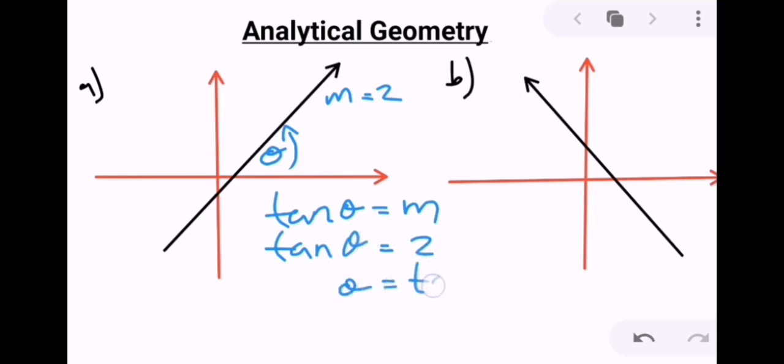I punch this into my calculator and my calculator gives me the answer 63.43 degrees, and that is the angle of theta. This is my angle of inclination—that angle over there is 63.43 degrees.